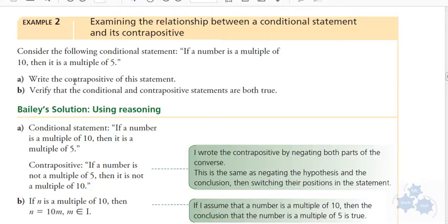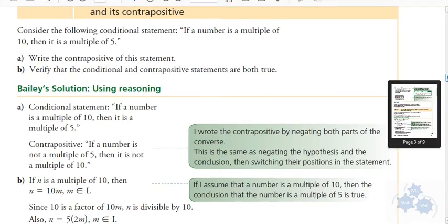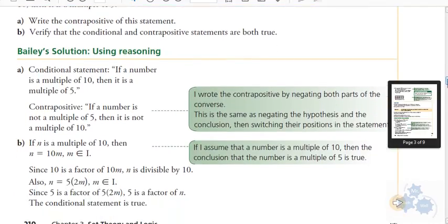So write the contrapositive. So we're going to have to flip multiple of 5, multiple of 10, and then we're going to have to negate them. We're going to have to flip and negate. Flip and negate. So this is the conditional statement down here, and the contrapositive is if a number is not, and what's the conclusion? A multiple of 5, then it is not a multiple of 10. So that's the contrapositive. Flip and negate.